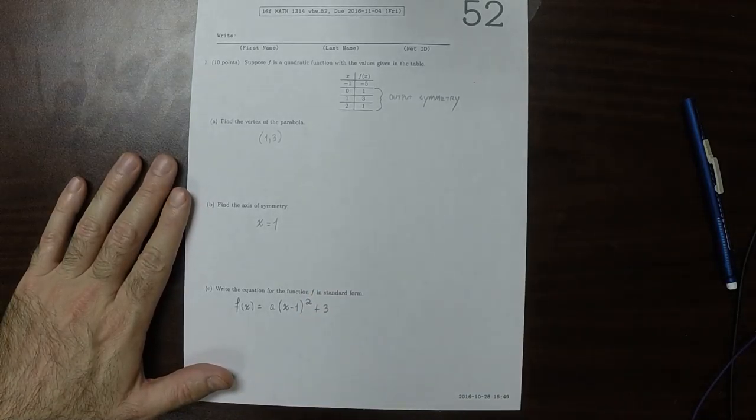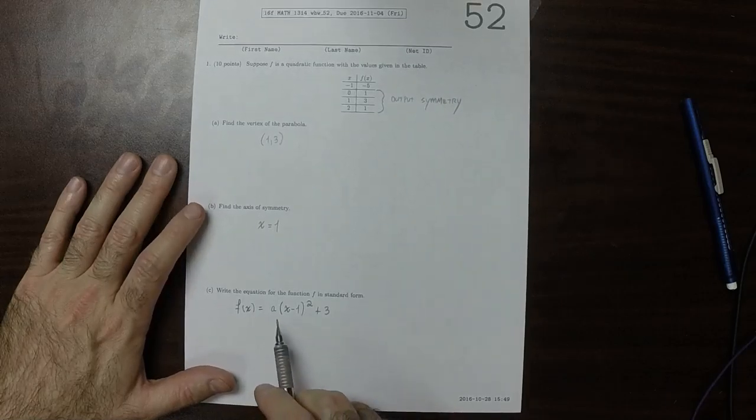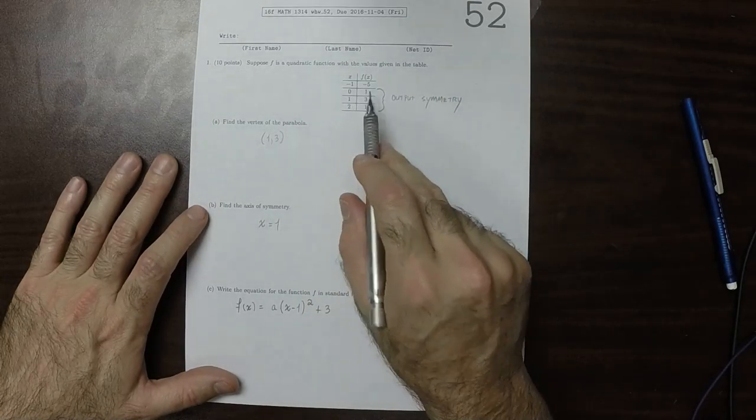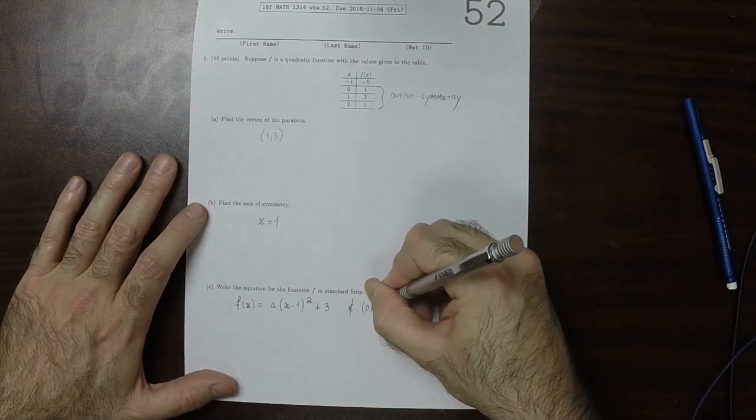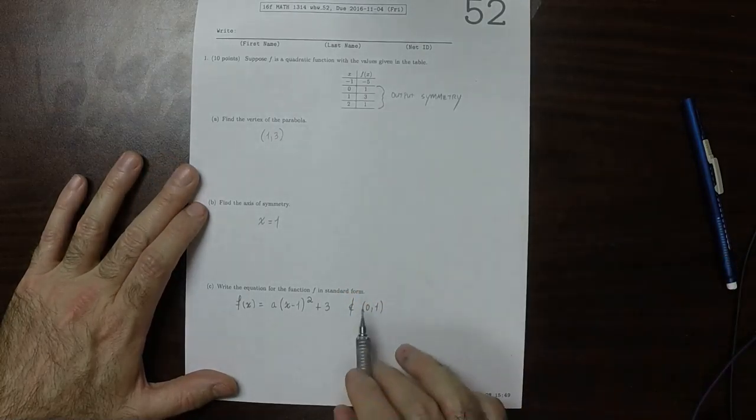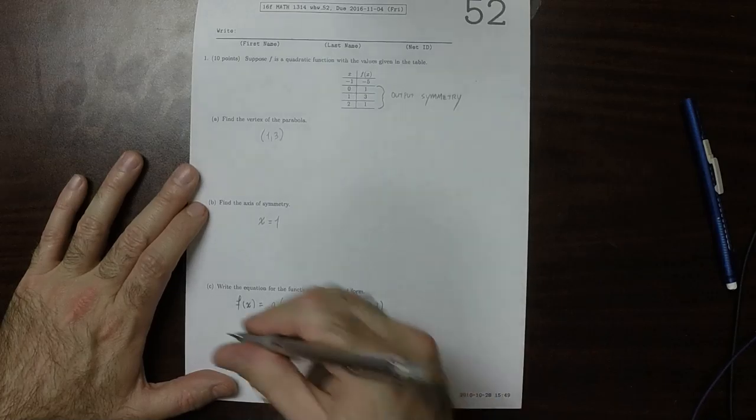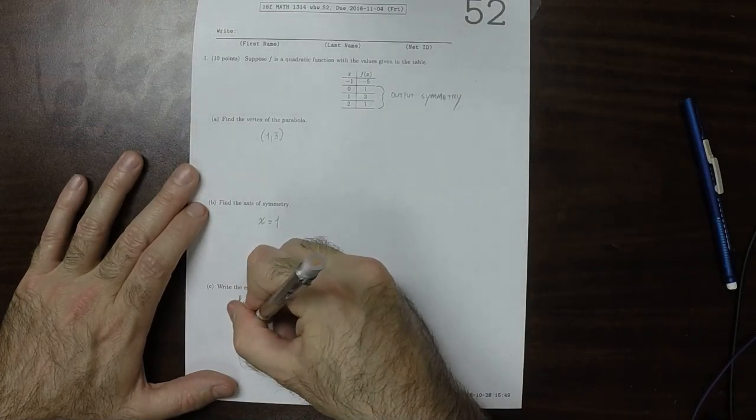And what we need to know is what is the value of a. Well, we can use this data. So we know that 0, 1 is a point on there. When we plug in 0, we're supposed to get 1. So f evaluated at 0.